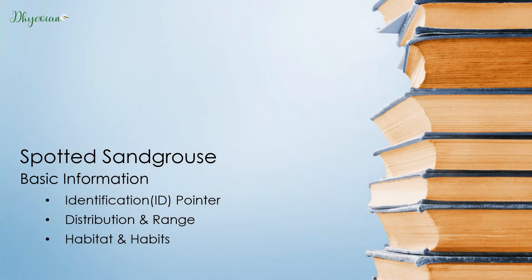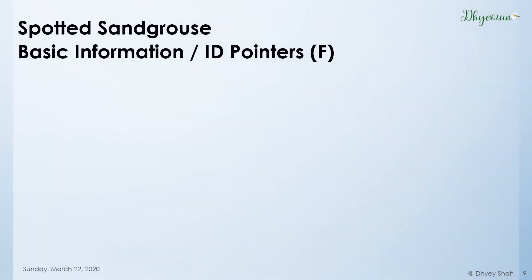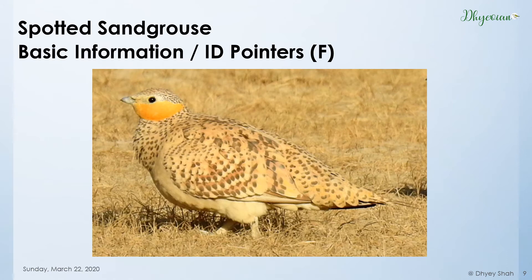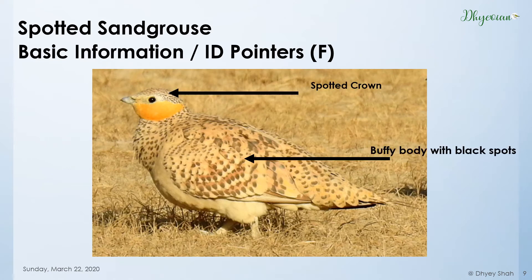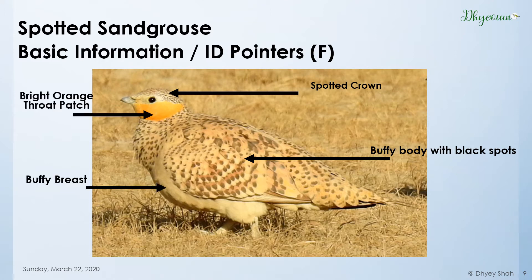Moving on to basic information, we will cover identification pointers, distribution, and habits. Let's discuss the ID pointers of the female. As the name suggests, the bird will obviously have spots — it has a spotted crown and a body with black spots. It also has a buffy breast and an orange throat patch. Technically, all four of these pointers identify a spotted sand grouse female.